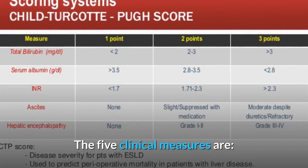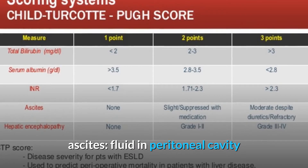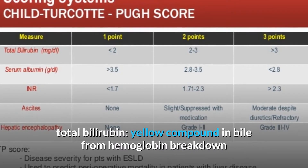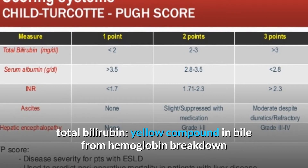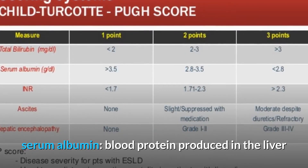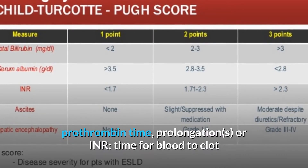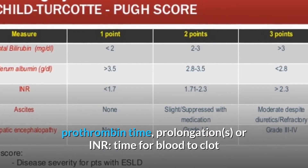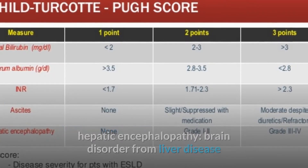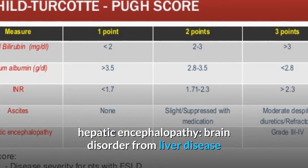The five clinical measures are: ascites (fluid in the peritoneal cavity); total bilirubin (yellow compound in bile from hemoglobin breakdown); serum albumin (blood protein produced in the liver); prothrombin time prolongation or INR (time for blood to clot).